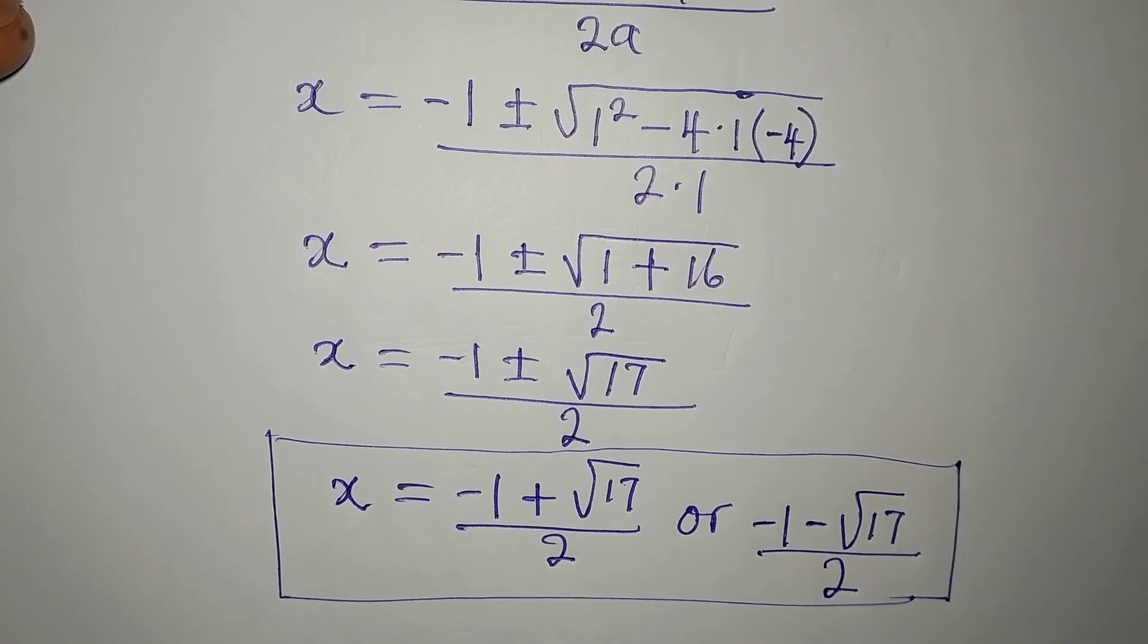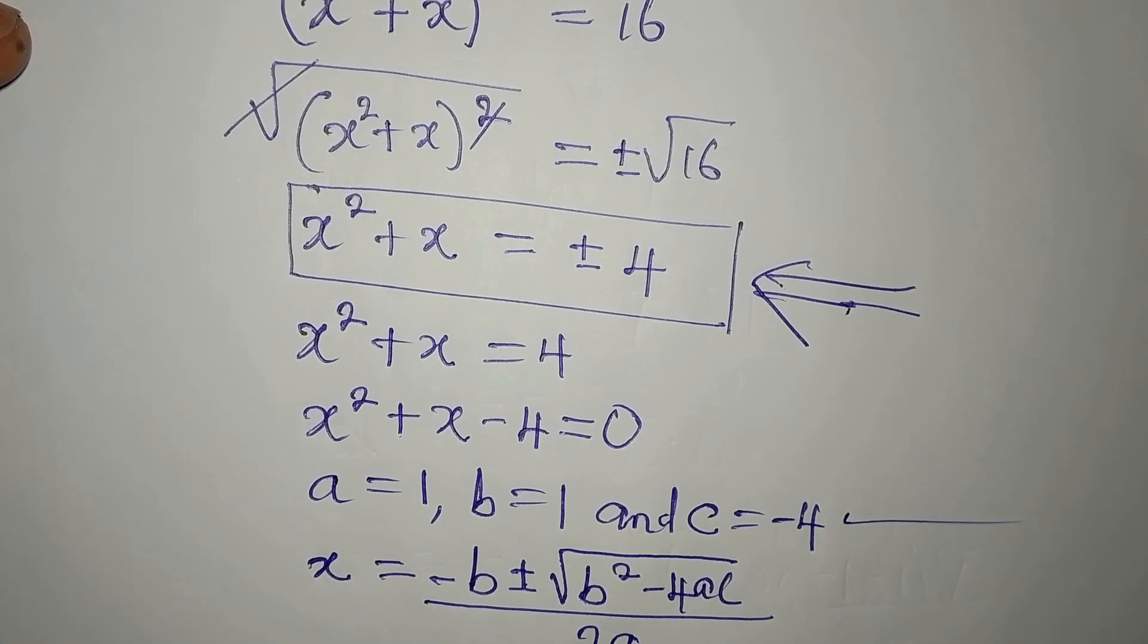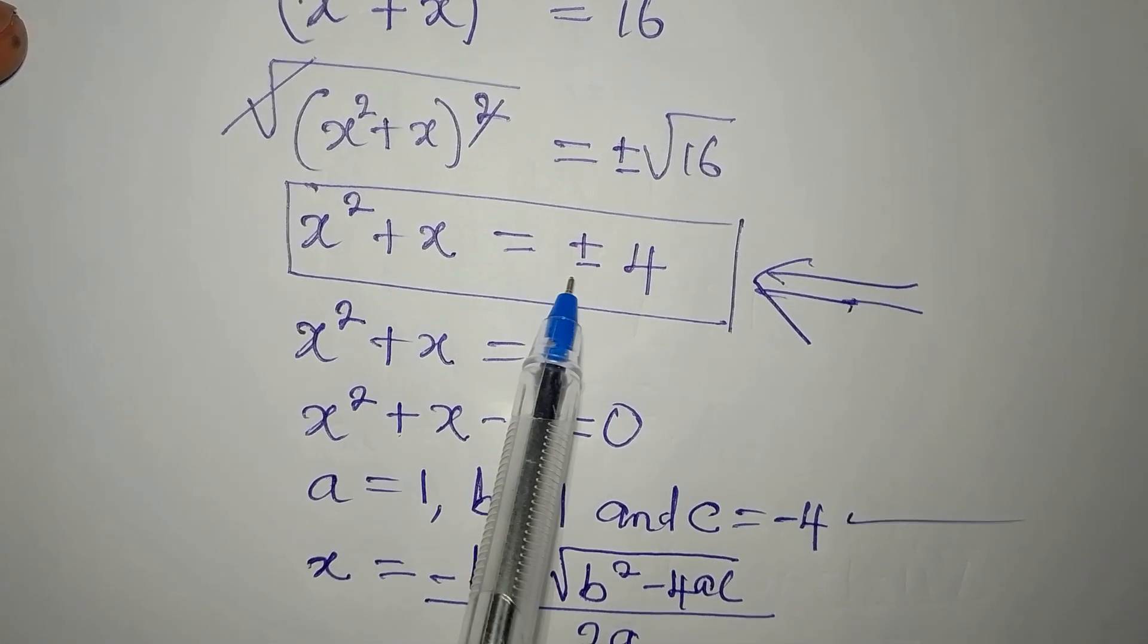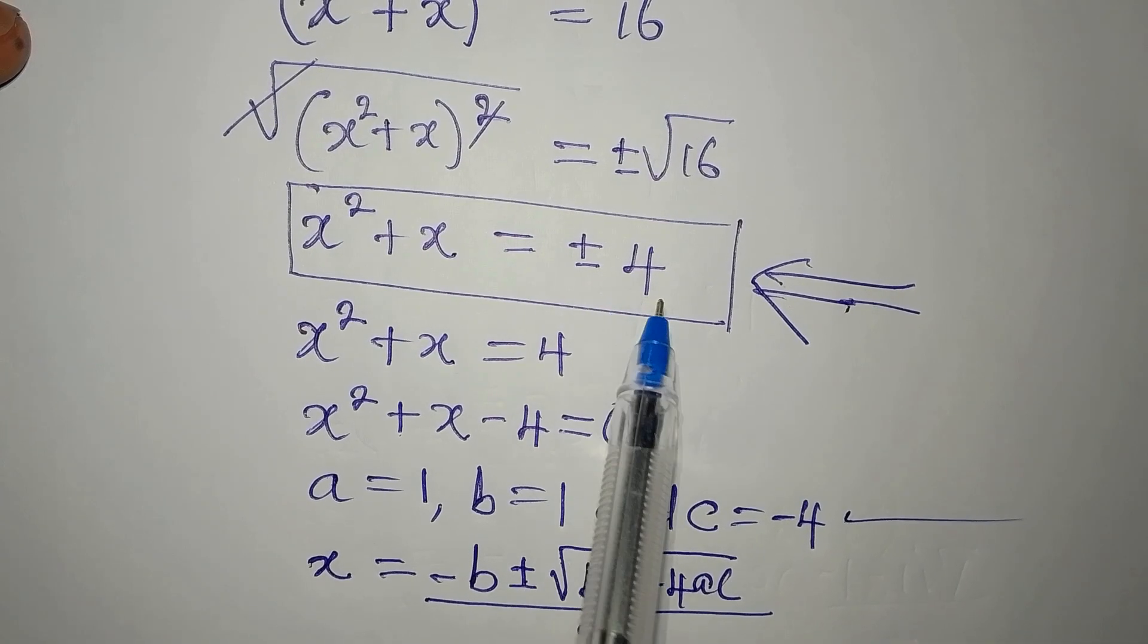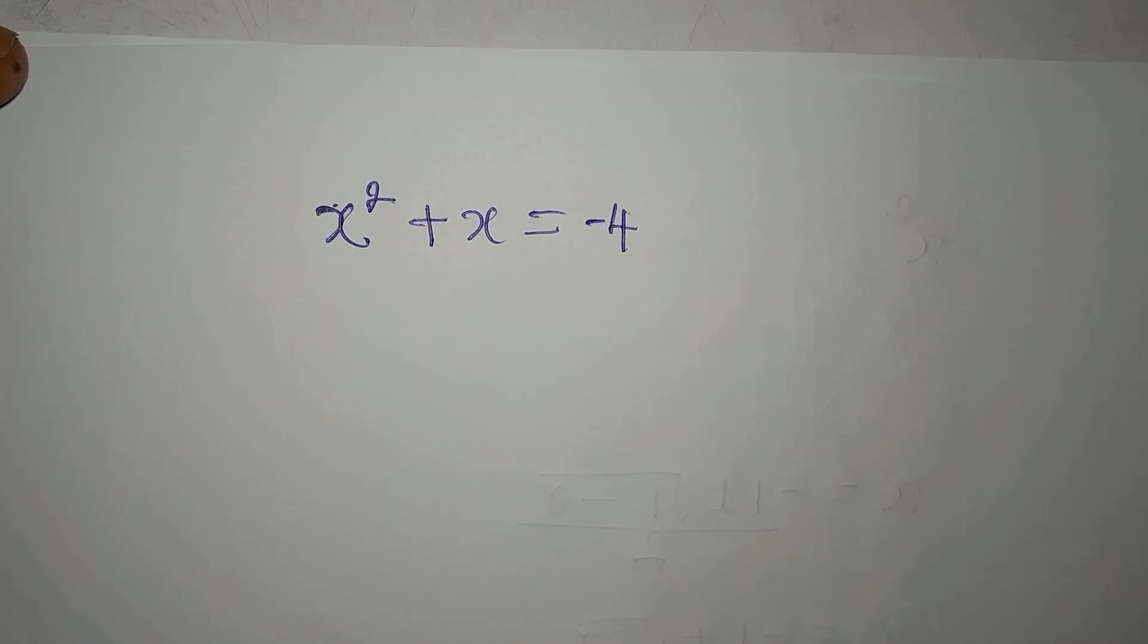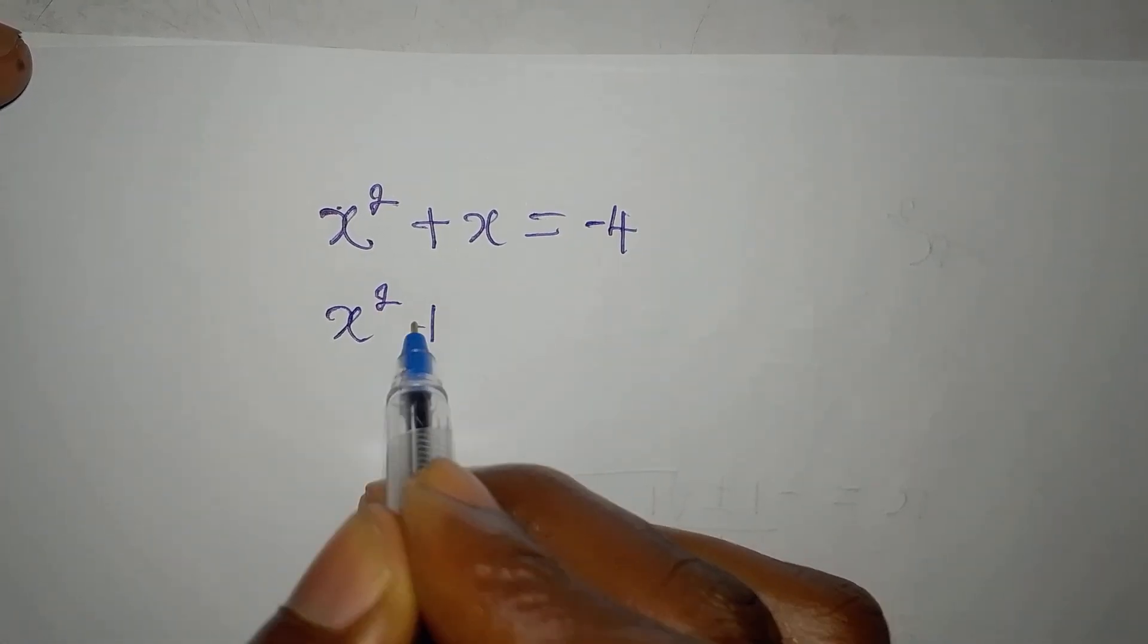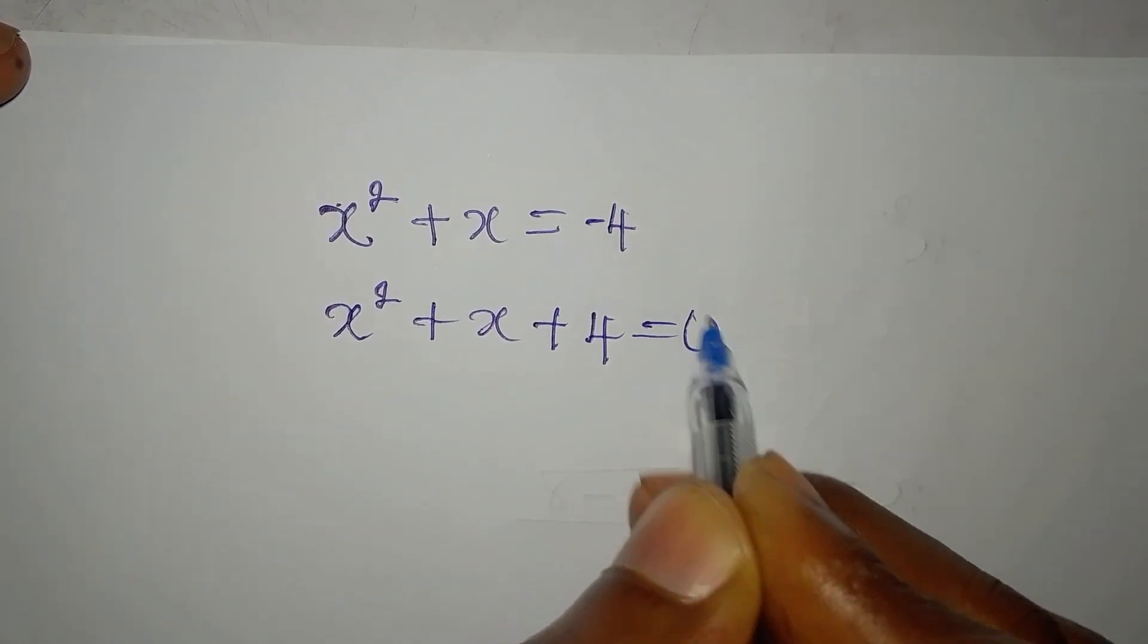Now, we will now go back to the other equation which we left out. Look at it here. We are going to pick this equation. But this time around, we are going to use minus 4 on the right-hand side. So this is what we have now. And bring this to the left. x squared plus x plus 4 equals 0.